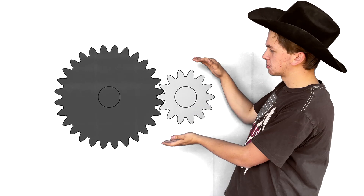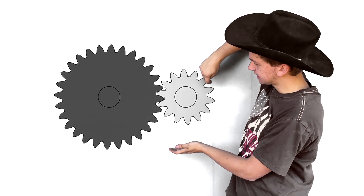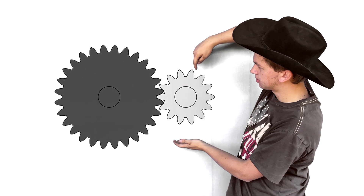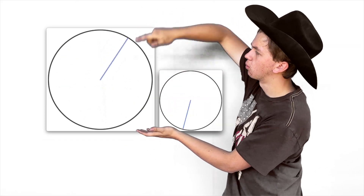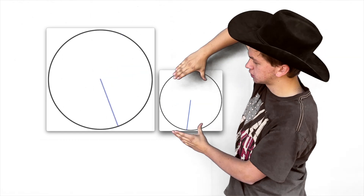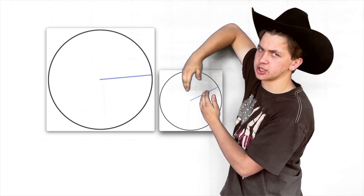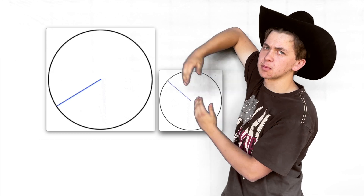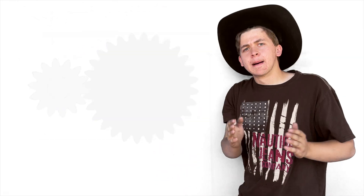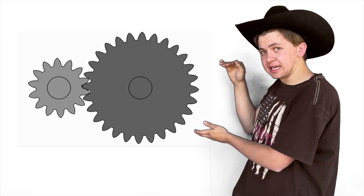A gear ratio is just a relationship of inputs and outputs of two gears. If we had a smaller input and a larger output, that would mean it would take multiple revolutions of the input to get the output to revolve once. If it's small to big, that would be a gear reduction or a speed reduction, but a torque multiplication — like a longer lever.